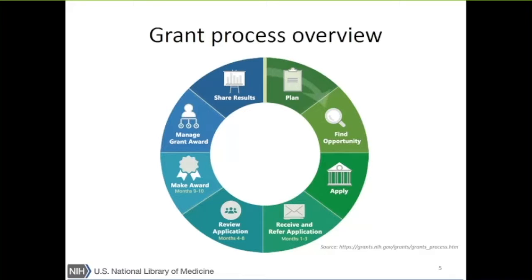It takes almost a year from when they write their grant application — it goes into receipt and referral, where the organization decides what institute would be most likely to fund it, and then it goes through a review application process, almost like a peer review. Two tools I'm going to talk about today work on opposite sides of this grant cycle. Sci-NCV is the biosketch tool used to make an NIH biosketch as part of their application, and MyBibliography helps after they've obtained an award to ensure full compliance with the NIH Public Access Policy.